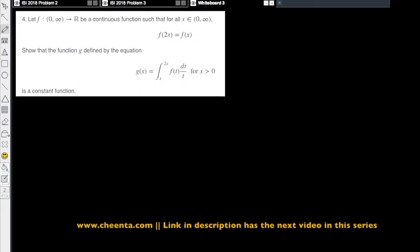Let's look at the fourth problem from ISI 2018. This is a very simple problem if you know the Leibniz rule. The idea is that we are given a function g of x. The problem looks complicated because this function is written in the integral form.